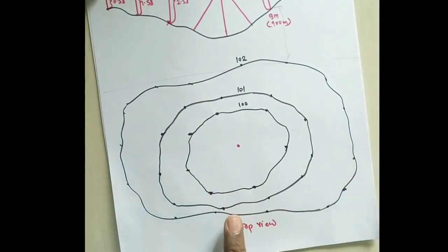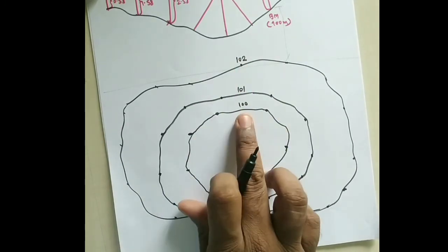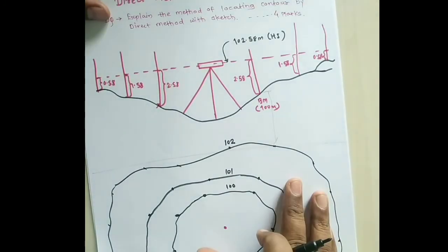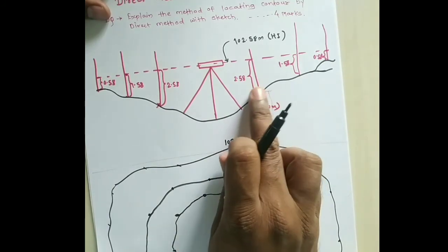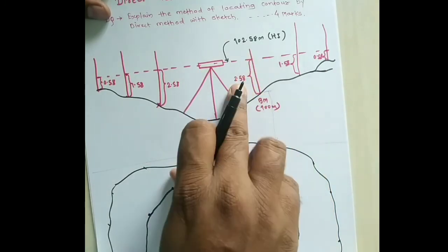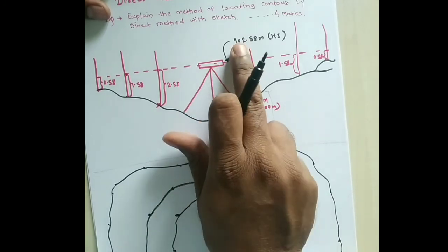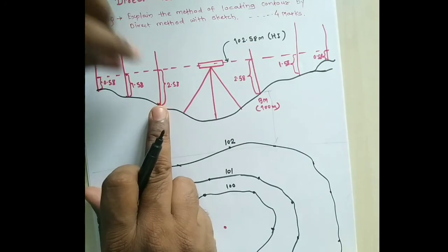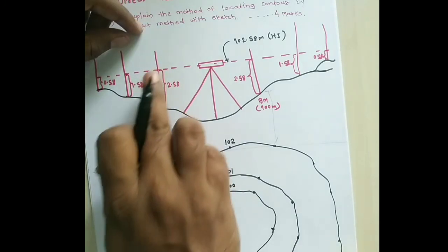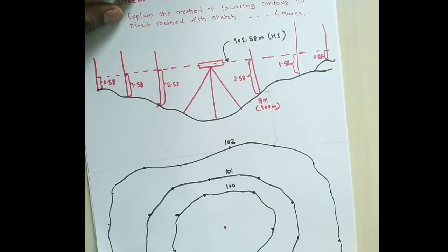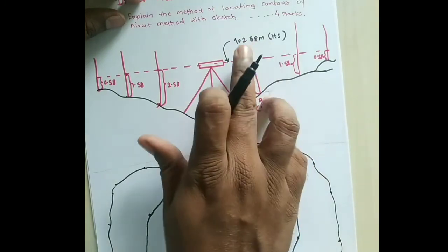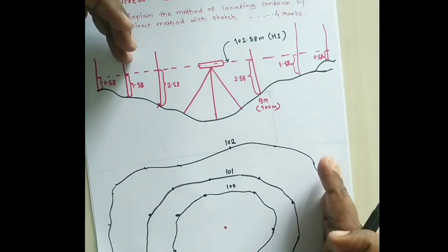This is the direct method of contouring. The process is: first select a benchmark, find the staff reading at the benchmark (back sight), calculate the height of instrument, then find particular places on the ground which give a constant staff reading corresponding to each desired contour value. For each contour — 100, 101, 102 meters — we subtract the contour value from the height of instrument to get the required staff reading.